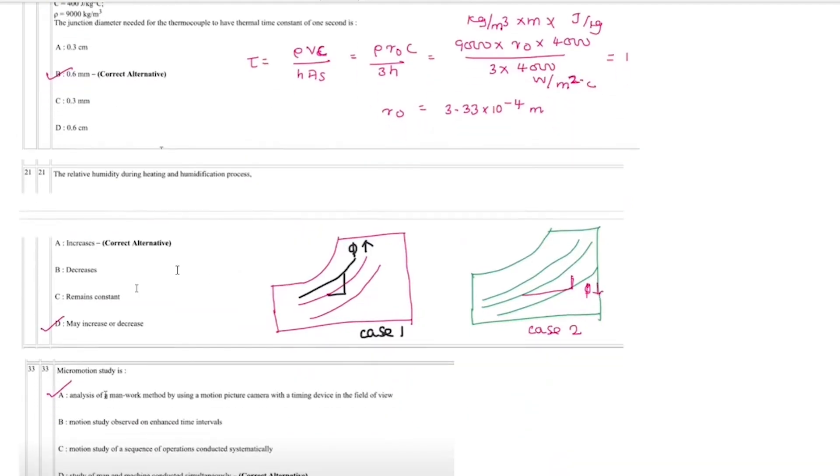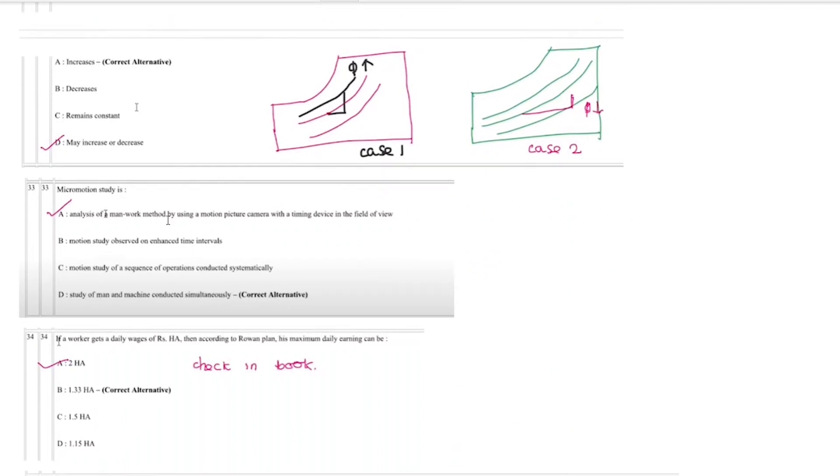If we look at the relative community numbers, we increase or decrease. That is changed. If we look at the micromotion study, that is also changed.